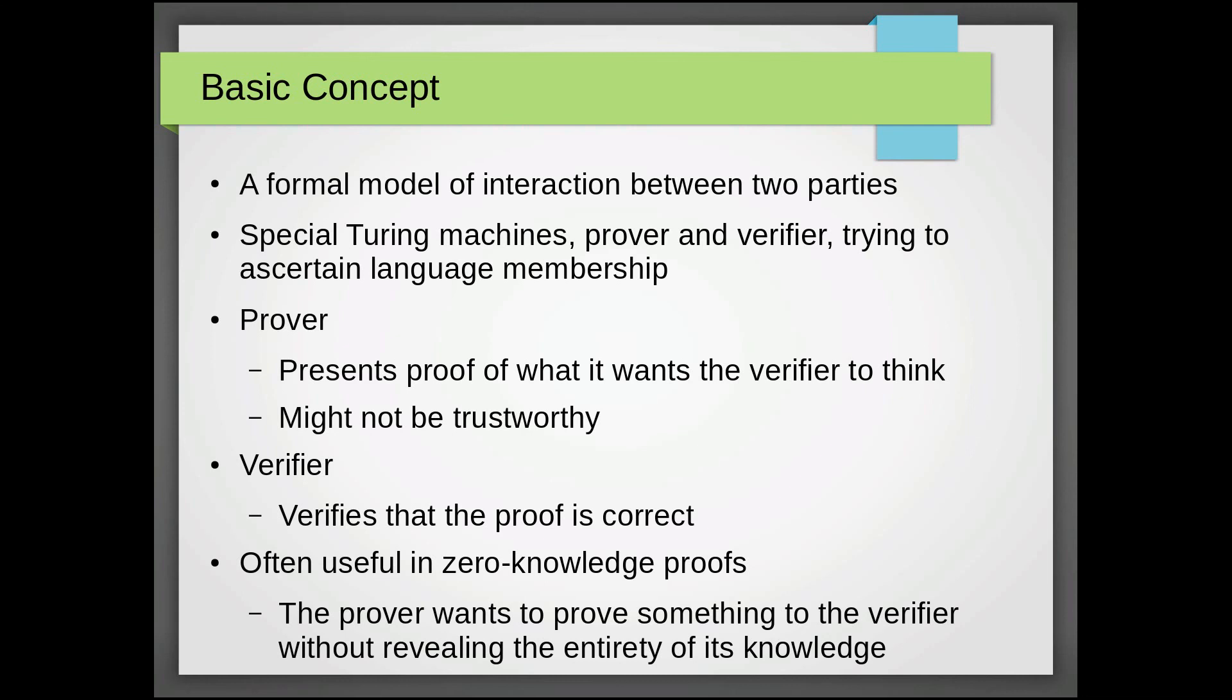The first machine, the prover, is trying to convince the verifier of something it wants that verifier to think. And it might not be trustworthy in a sense that what it wants the verifier to think might not actually be true.